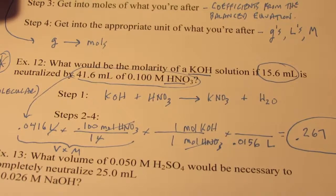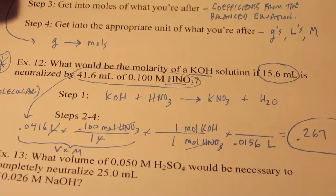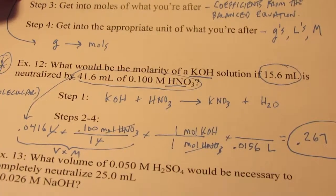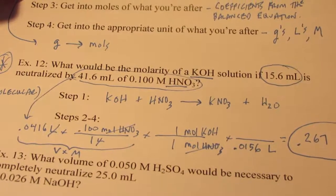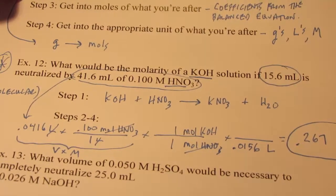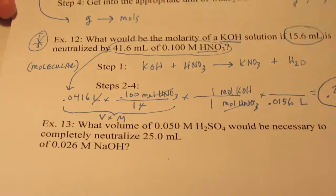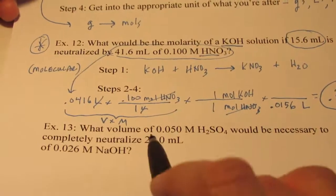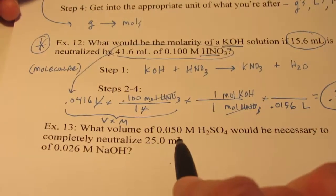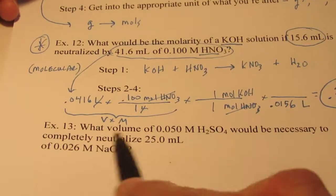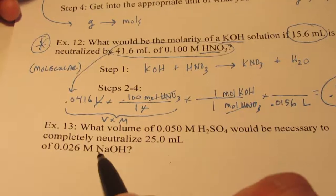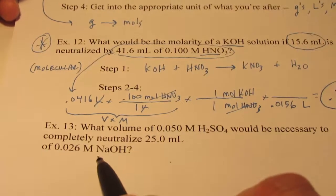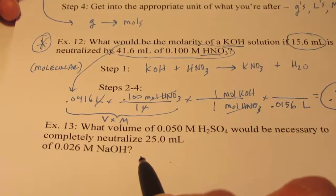If you didn't follow how I did that, stop and go back. There's also an example in your book. Let's do example thirteen: What volume of 0.050 molar sulfuric acid is necessary to neutralize 25 mL of 0.026 molar sodium hydroxide?